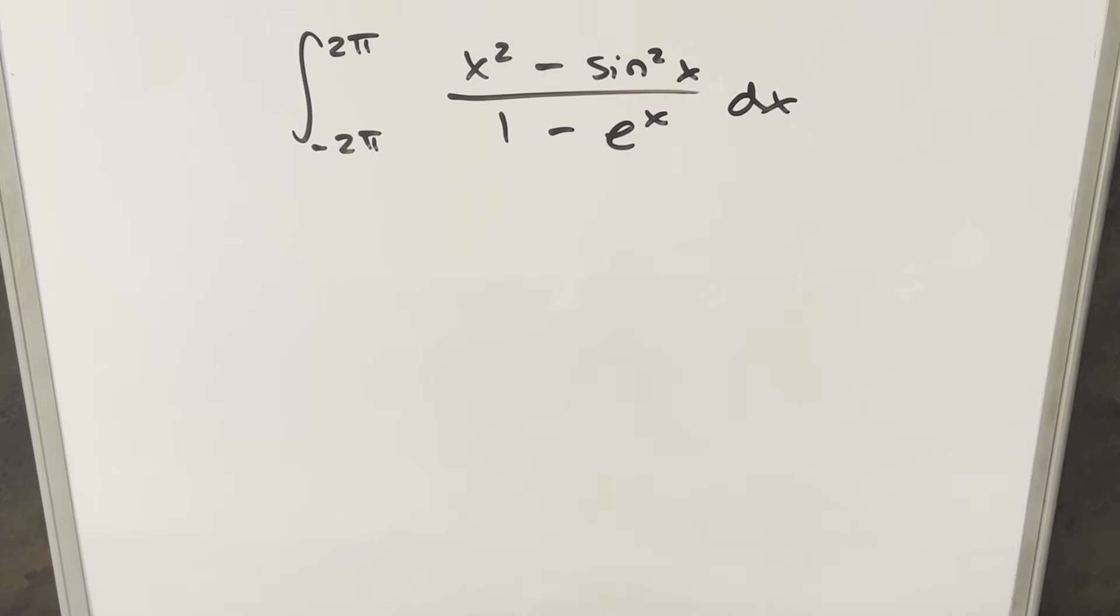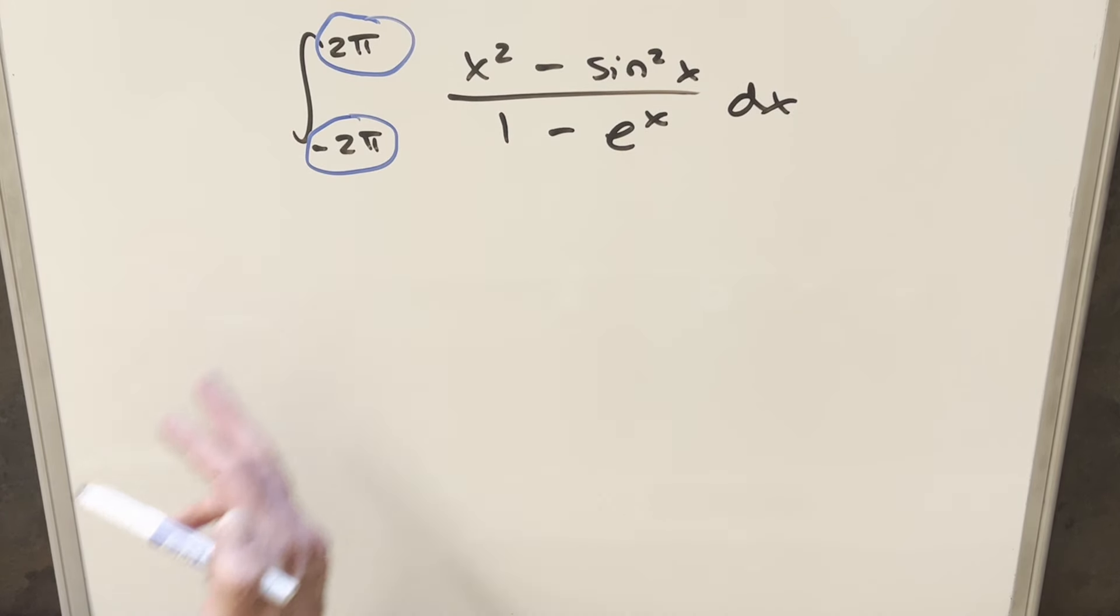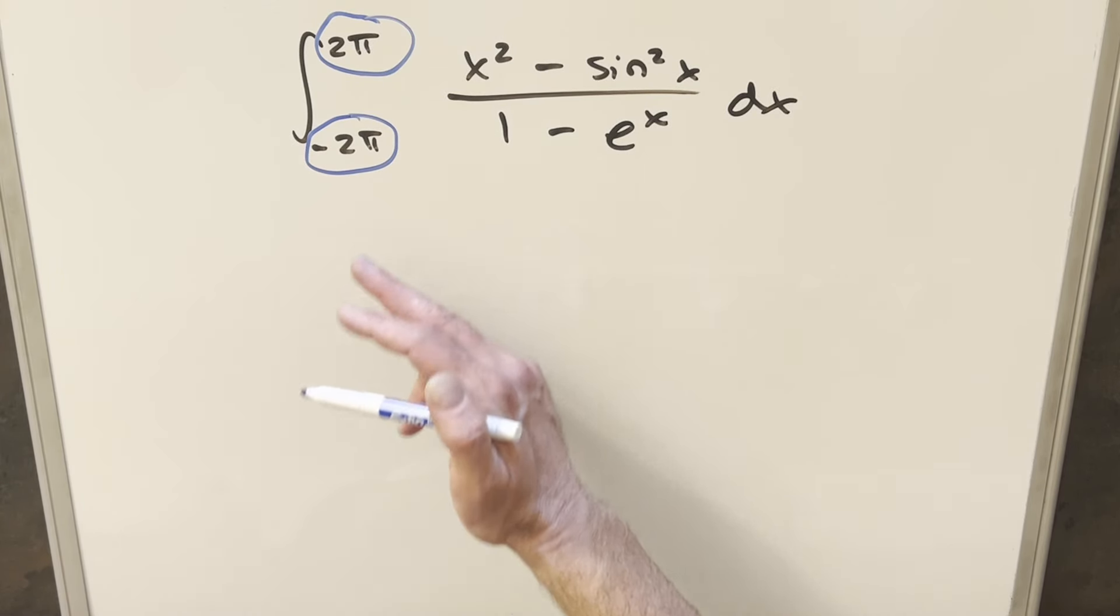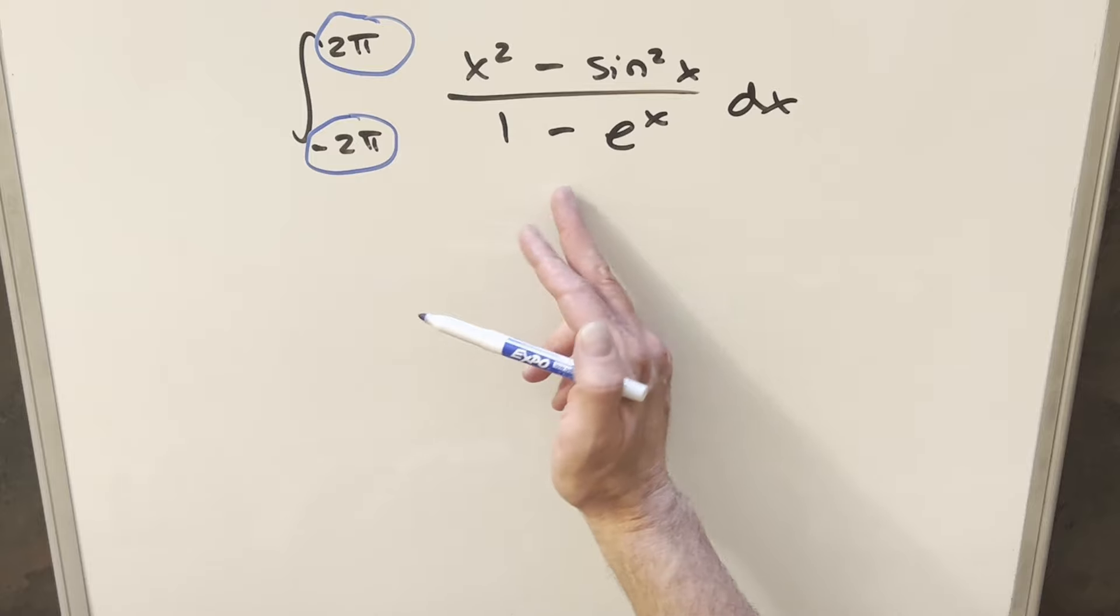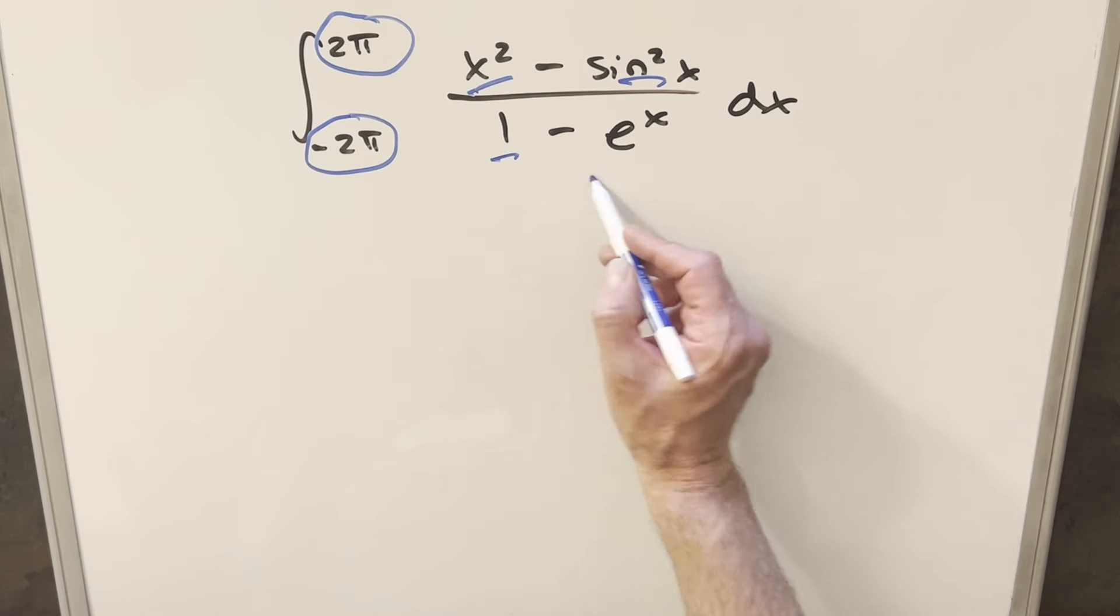The first thing I notice here is the symmetric bounds. This usually sticks out as something we're going to want to use. The first thing I look for is even or odd functions. If the function was odd and we have symmetric bounds, then the whole thing would be 0. But clearly this isn't odd where we have all these squared terms, so that's not going to work.